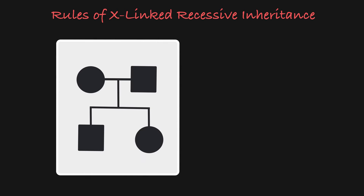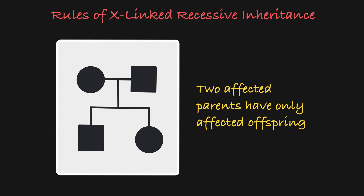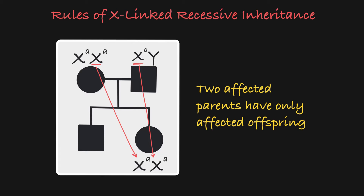Similarly, if both parents are affected, that means they both carry only recessive alleles, and therefore all of their children must only be carrying recessive alleles and must be affected.